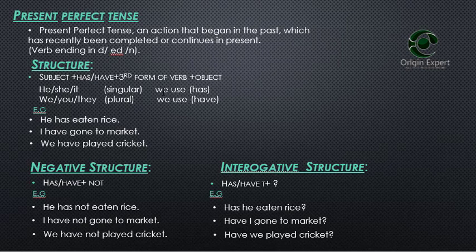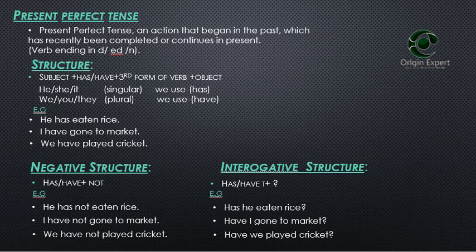For singular subjects we use 'has', and for plural we use 'have'. For example: 'gone' — I have gone. Eat becomes 'eaten'. In present perfect we have played cricket.